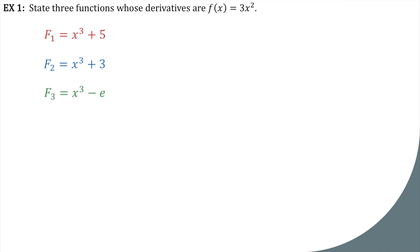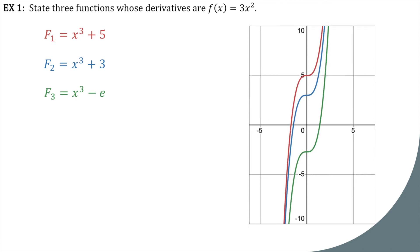What about x to the third minus e? If we graph each of these functions, we can see that it's basically the same function just shifted based on these constants here. So as long as that last term is some constant, then the derivatives will all be the same. The graph is just translated up or down by c units. Okay, keep that in mind.